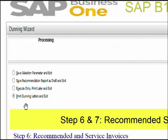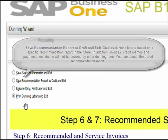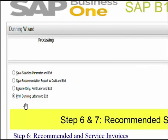The second option — save recommendation report as draft and exit — creates the Dunning letter based on a specific recommendation report in the future. In addition, invoices, credit memos, and payments included will not be covered by other Dunning runs. You can also cancel the same recommendation report if needed.